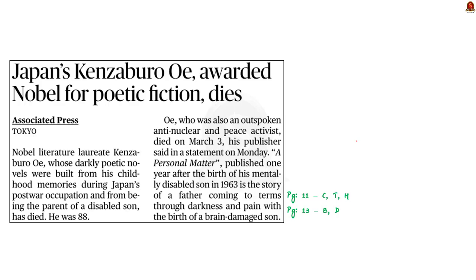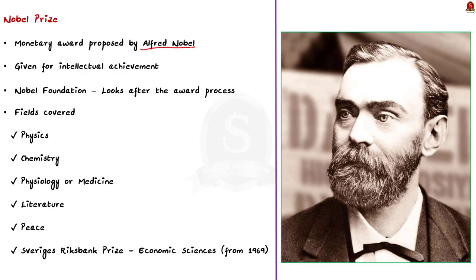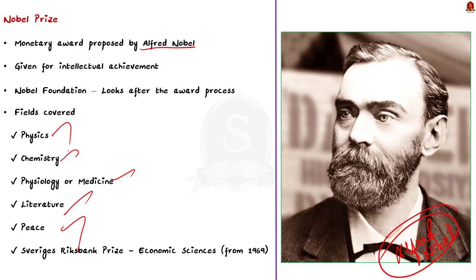OE Kenzaburo won the Nobel Prize for Literature in 1994 for his poetic fiction work. In this context, let us learn about Nobel Prize from a prelims perspective. Nobel Prizes are monetary prizes awarded annually from a fund created by Swedish inventor and industrialist Alfred Nobel. In 1895, Alfred Nobel signed his last will giving his personal wealth for a series of prizes in physics, chemistry, medicine, literature and peace. The Nobel Foundation, a private institution, oversees the Nobel Prizes and tries to fulfil Nobel's intention of awarding individuals with monetary prizes for intellectual brilliance.